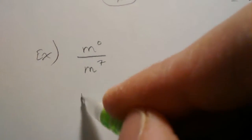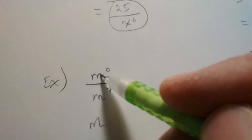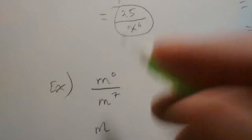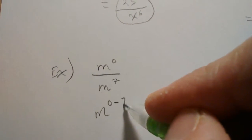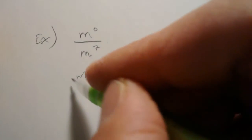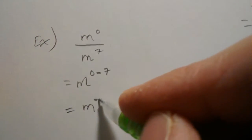The first way is to use the division of like bases rule, which would mean subtract. So m to the 0 power minus 7 up there, and that would give you that operation to do, which is a negative 7.